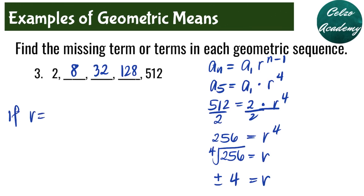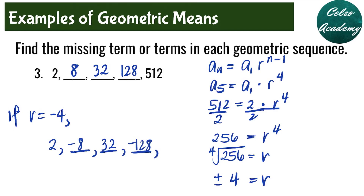If r is equal to negative 4: the first term is 2, the second term is 2 times negative 4, that's negative 8. Times negative 4 is positive 32. Times negative 4 is negative 128. And times negative 4 gives 512. So we have two sets of possible answers: it can be 8, 32, and 128 if r is positive 4, or negative 8, 32, and negative 128 if r is negative 4.